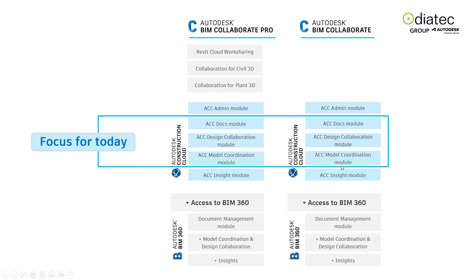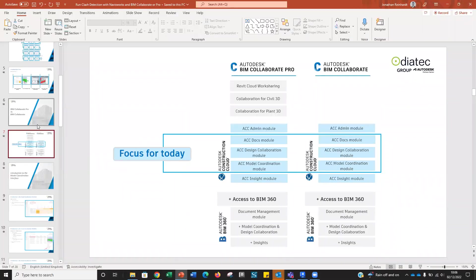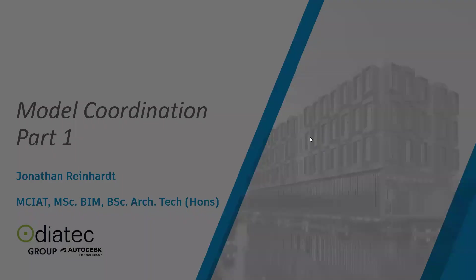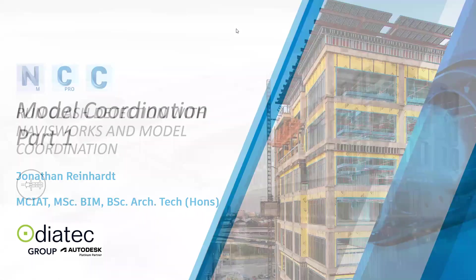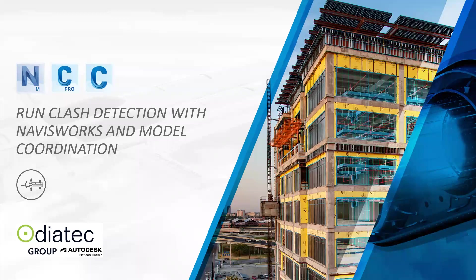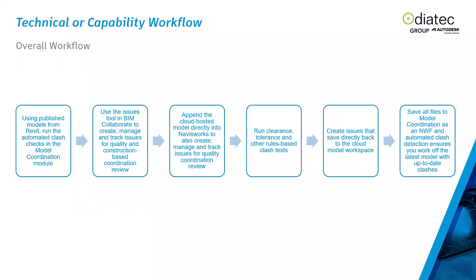I'll get through a couple of slides and then jump into a live demonstration. Put your questions into the chat box during the webinar. The recommended workflow is: you run clash detection with Navisworks and Model Coordination. You publish models from Revit, run automated clash checks in the Model Coordination module, then use the Issues tool in BIM Collaborate to create, manage, and track those issues.